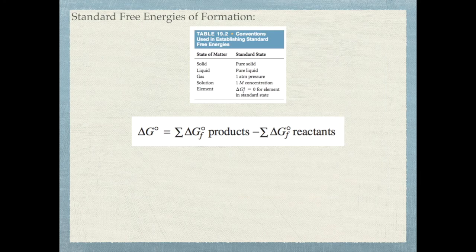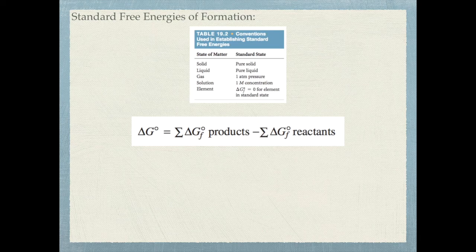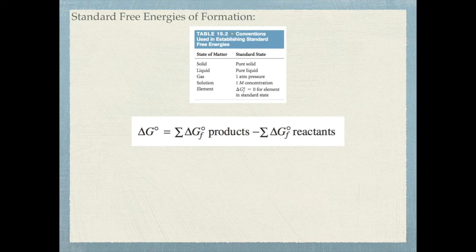This table shows standard free energies of formation — similar to what we used for entropies and enthalpies. Standard state conditions: for a solid, it's a pure solid; for a liquid, a pure liquid; for a gas, one atmosphere pressure; for a solution, one molar concentration. The standard free energy of formation of an element is zero, just as with enthalpies of formation. To find the standard free energy of a reaction, sum the free energies of formation of the products and subtract the standard free energies of formation of the reactants.